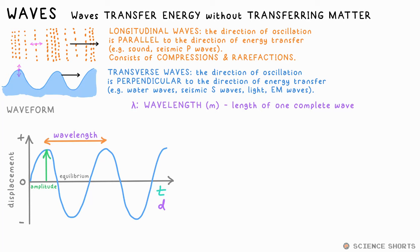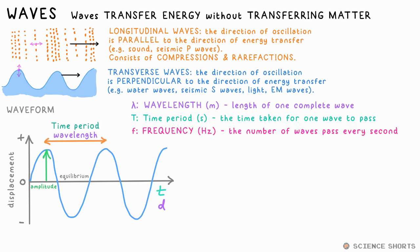If it's time on the x-axis instead, one complete wave gives you the time period. This is the time it takes for one complete wave to pass. Frequency, on the other hand, is how many waves pass a point every second, and the unit is hertz. Frequency is equal to 1 over time period, f equals 1 over t.